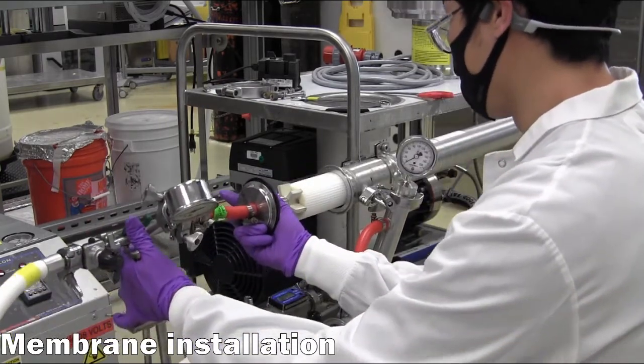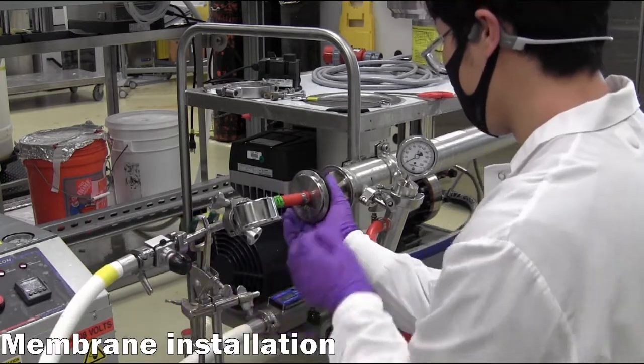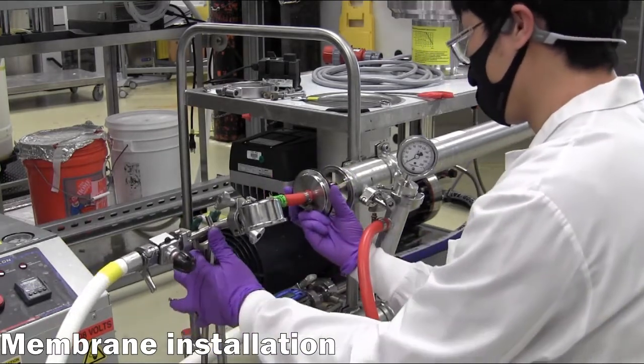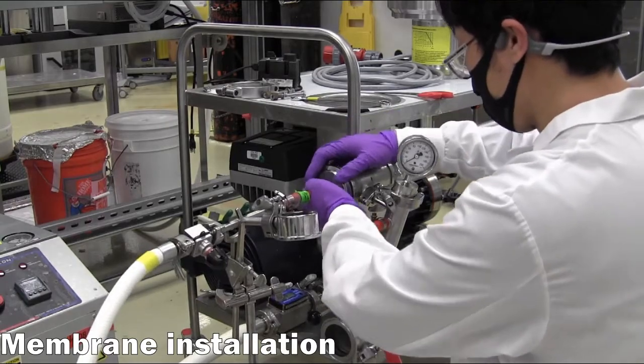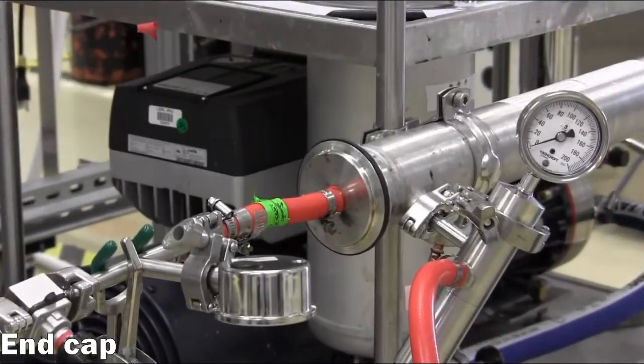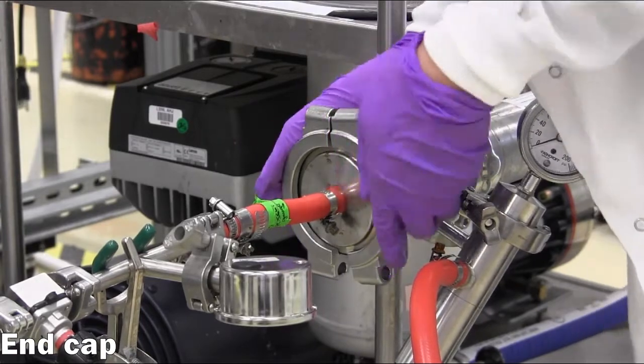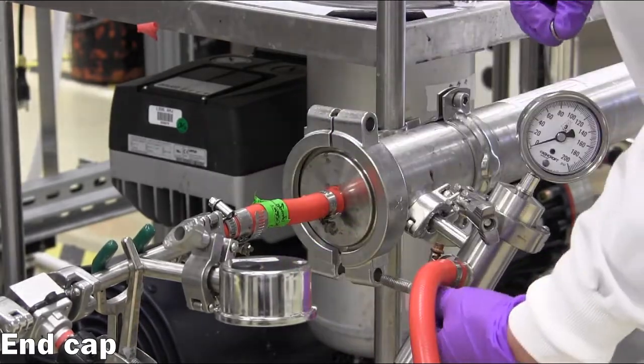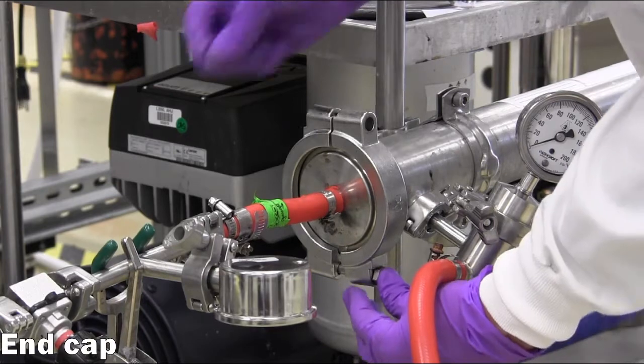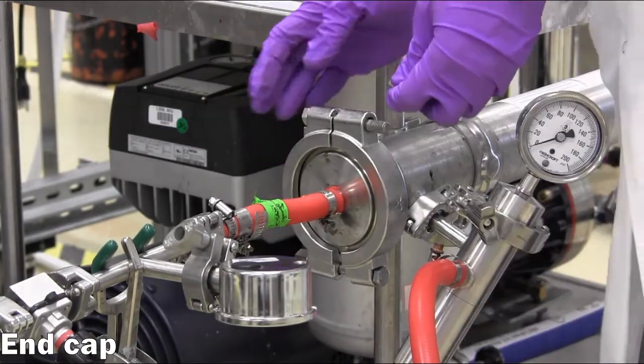Now the membrane is fully inserted into the housing, and the end cap is reinstalled. The end cap clamp is secured with fastening hardware, and then tightened with a wrench until the clamp is secure.